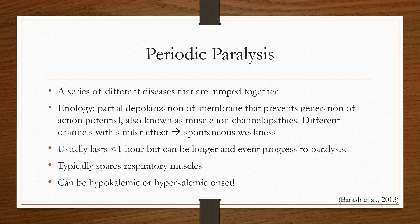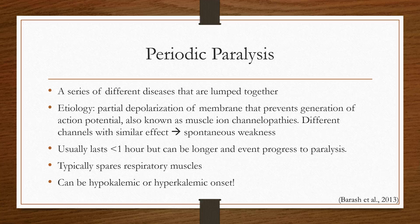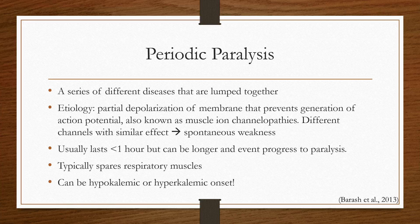Periodic paralysis is a description for a group of diseases lumped together. Basically, when muscle cells are working correctly, ion channels propagate an action potential down the sarcolemma to cause muscle contraction. However, abnormal ion channel properties can prevent that. When electrochemical gradients are disrupted by shifts in ion concentrations, the channels don't work properly — that's what happens in periodic paralysis. Episodes can characteristically last less than an hour but may last longer. It typically starts as weakness and can progress to paralysis, which is understandably frightening. Fortunately, it typically spares the respiratory muscles.